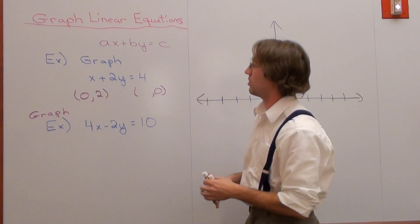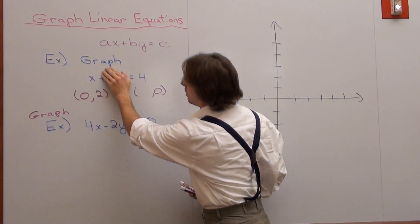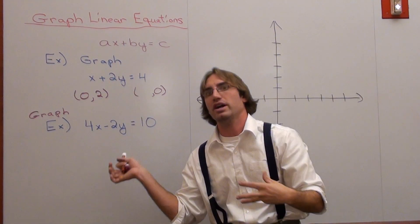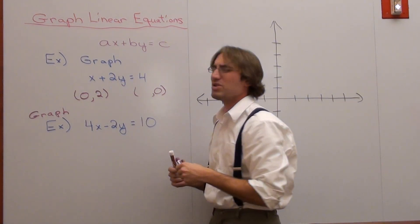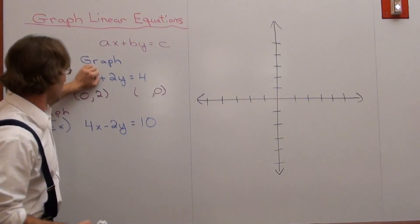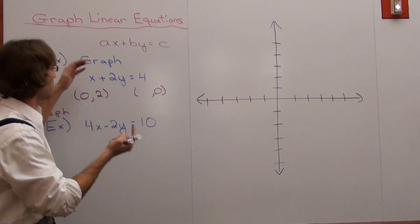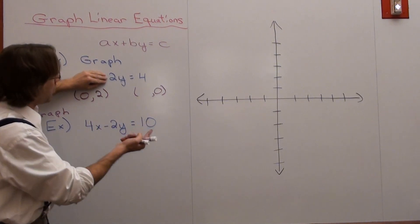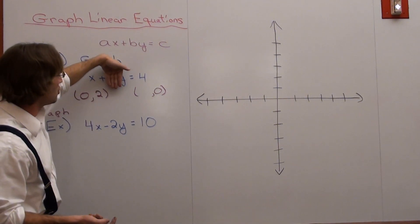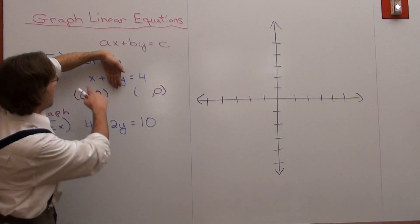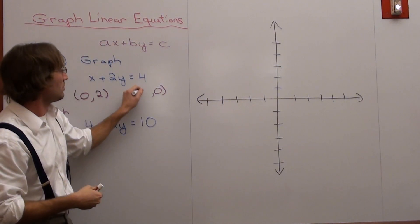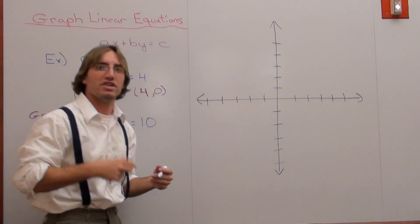Now I try it for the x. If I cover up the 2y term — since y equals 0, that term disappears — I just have x equals 4. So I don't have to divide or subtract anything; it's already there. Let me clarify: you cover up the x term when x is 0, because if you substitute in 0, x doesn't matter, and you have 2y equals 4, giving y equals 2. If you substitute 0 for y, the 2y term goes away and you just have x equals 4.